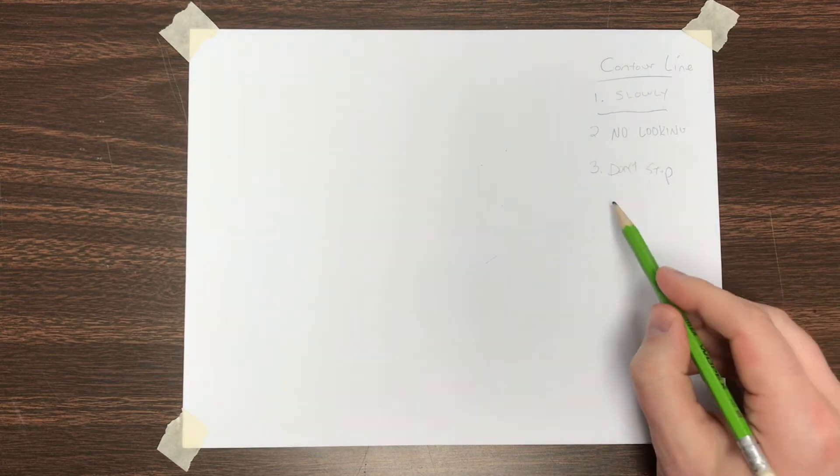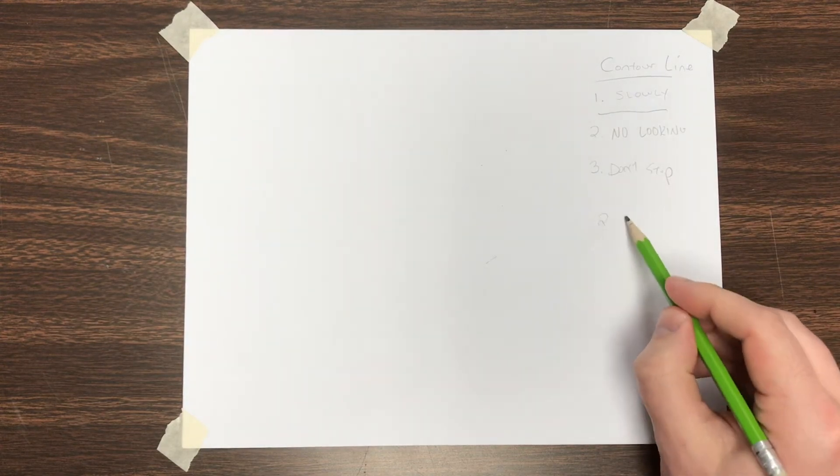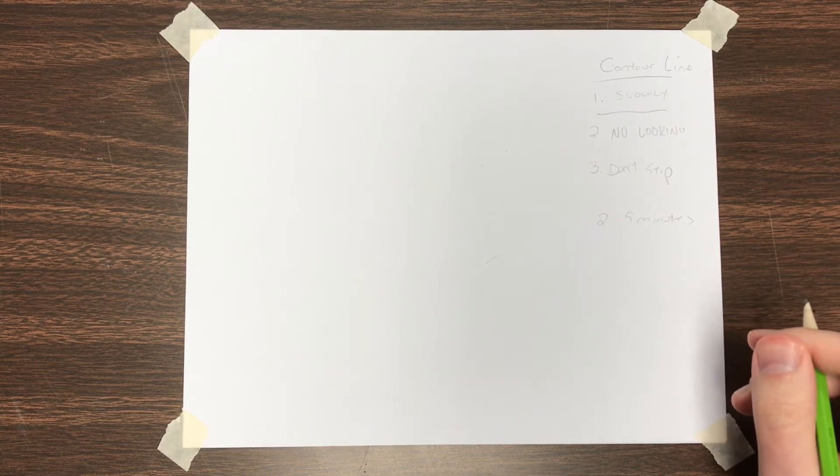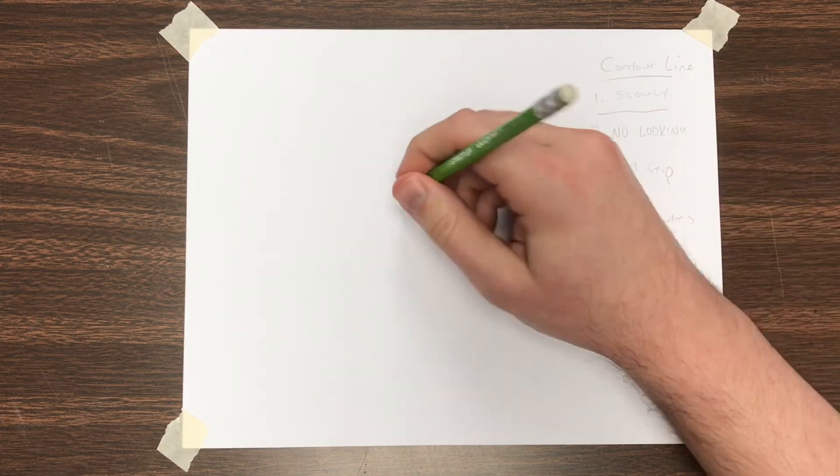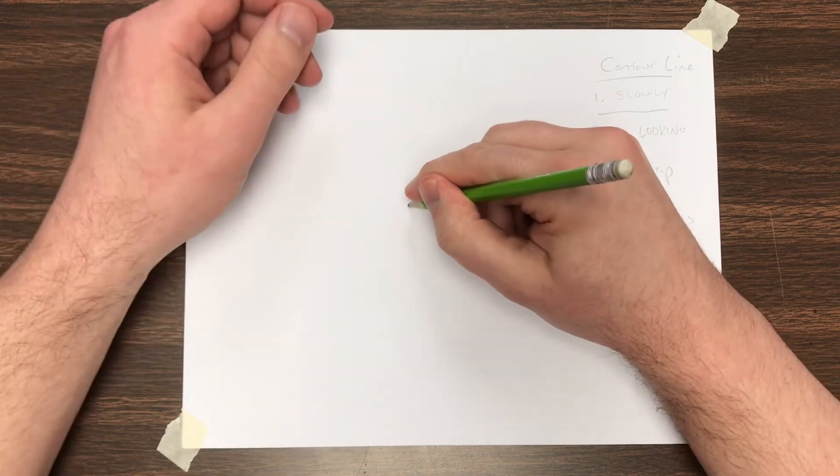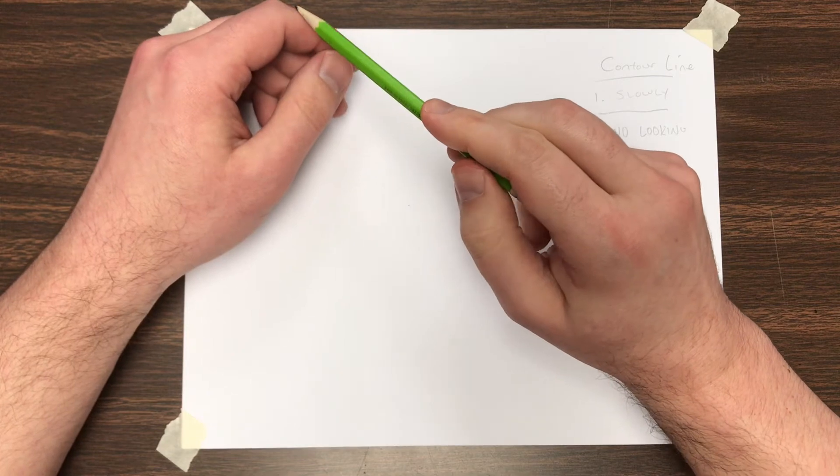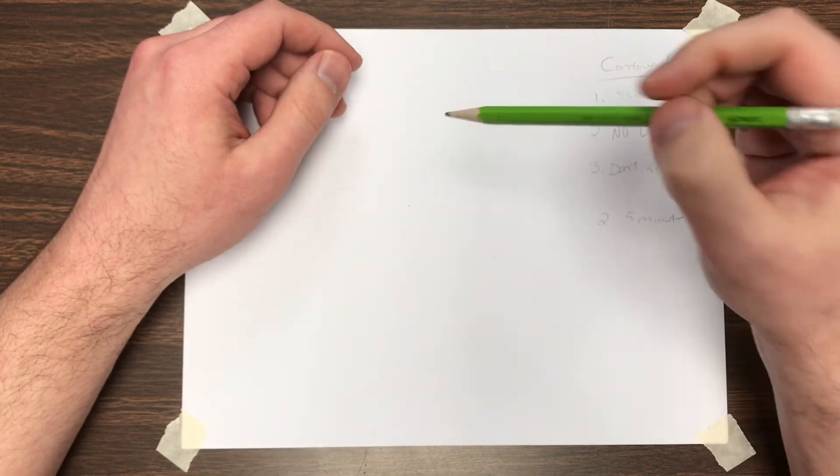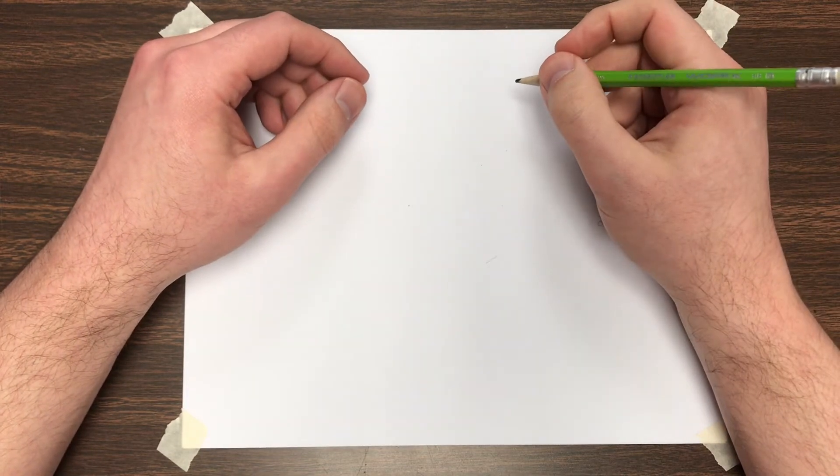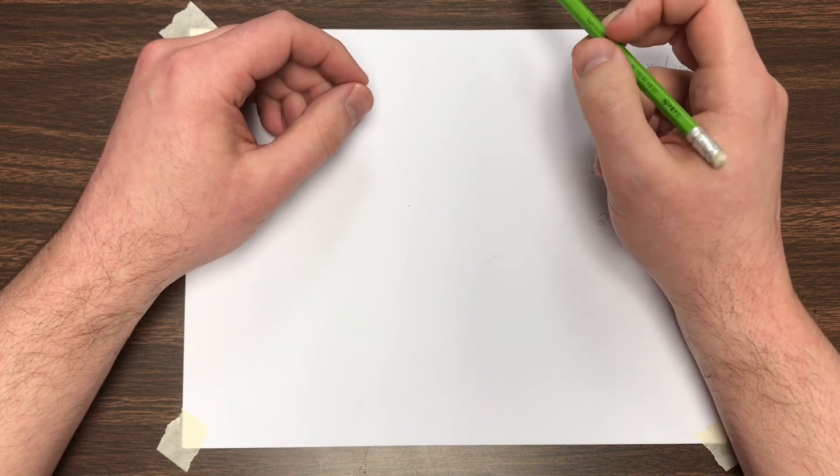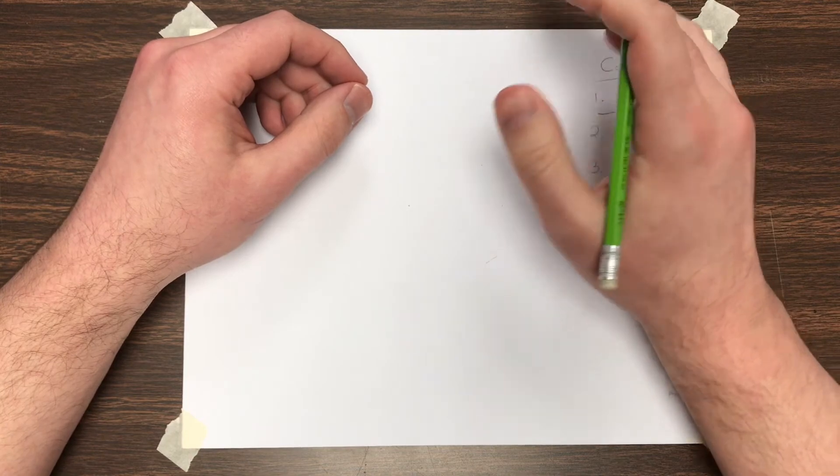Now you're going to do two drawings that are going to be five minutes long. So set a timer for five minutes, put your pencil on the page, pick a spot on your hand, and as your eye goes around, that's where your pencil is going to go. So I'm going to draw for a couple seconds. Maybe I'll just draw my thumb and show you how that should look. But you should have your hand turned in the opposite direction so that you can't see the paper.